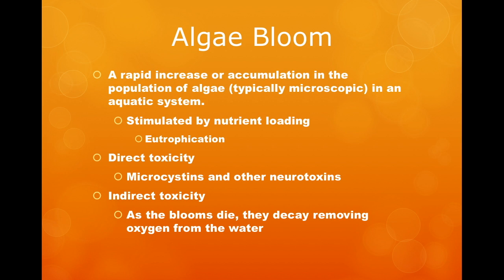What is an algal bloom? There is no official definition, but they are categorized by rapid increases in the amount of algae — both the absolute number of cells and the volume of cells — in an aquatic system. They are stimulated by nutrient addition, also known as eutrophication. They can be directly toxic to aquatic life, as well as humans, through the production of toxins such as microcystins.